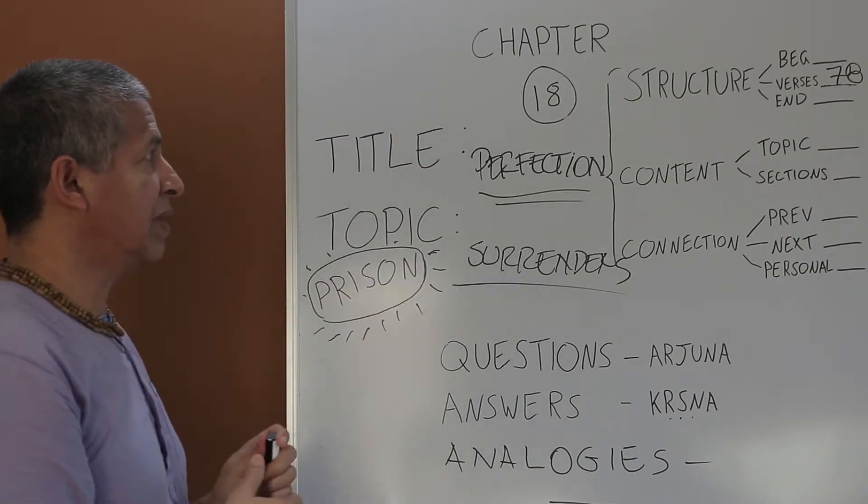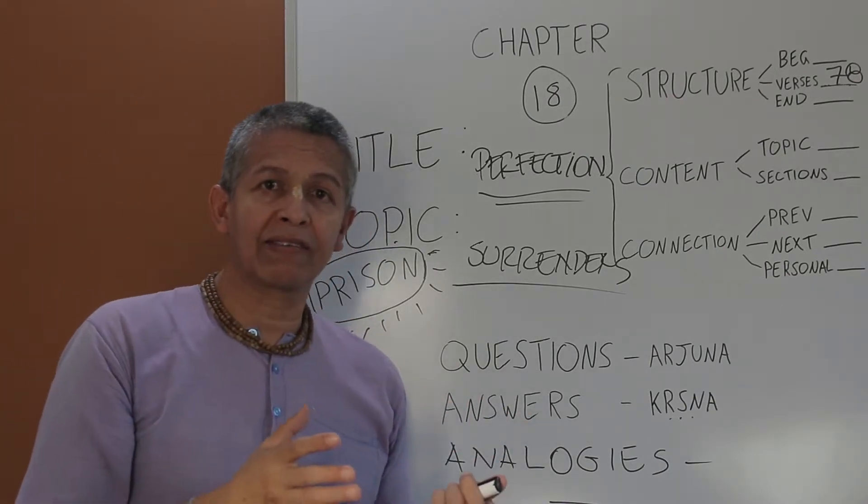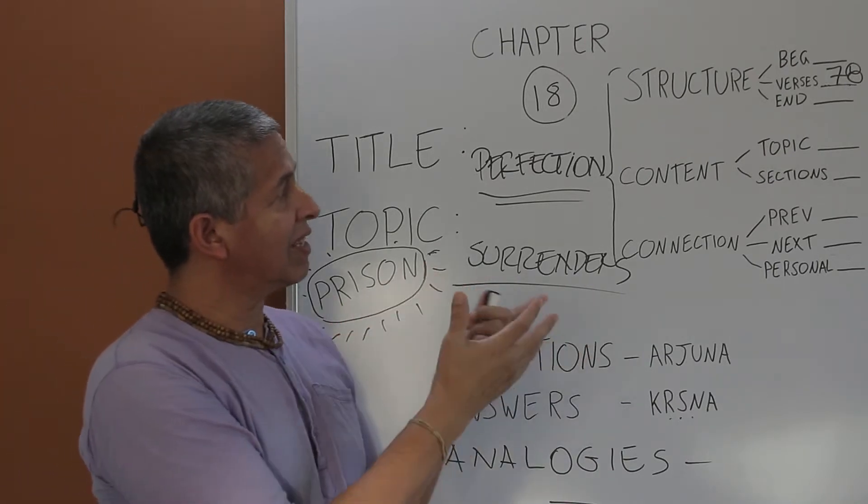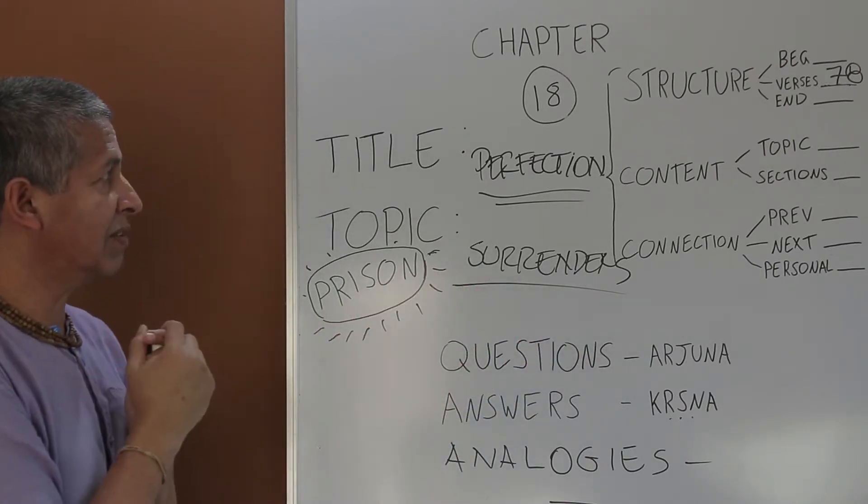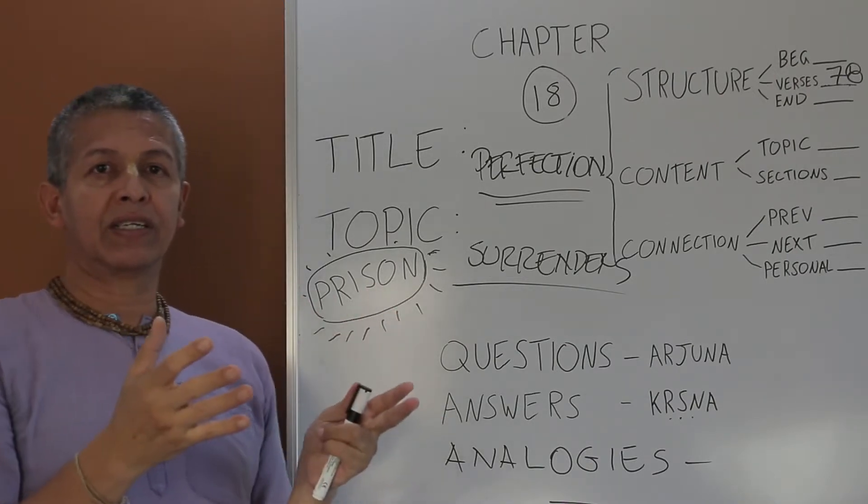Now, let's go through the format. The beginning is that Arjuna asks his last question. The first question that he presents here, the only question that he presents in this chapter is, what is renunciation, and what is renunciant? What does it mean?